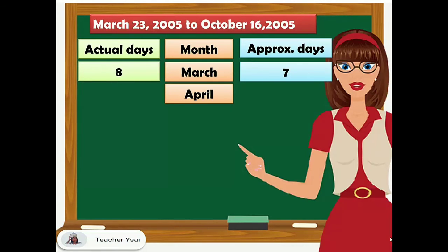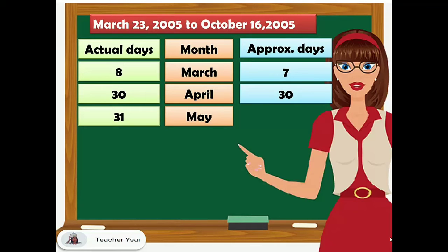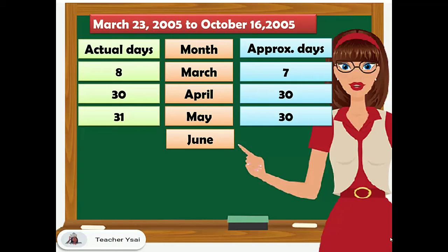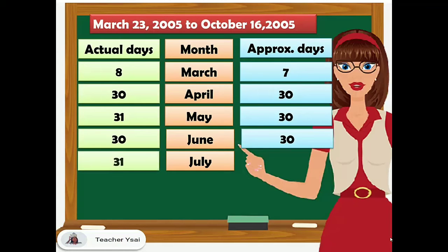For the month of April, the actual number of days is 30 and the approximate days is also 30. For the month of May, the actual number of days is 31 and the approximate days is also 30. For the month of July, we have 31 actual number of days and 30 approximate days. For the month of August, we have 31 actual number of days and 30 approximate days.